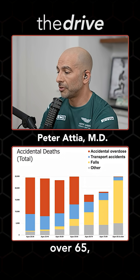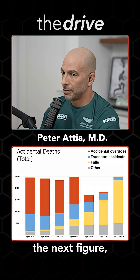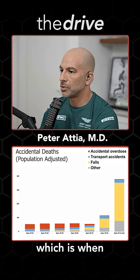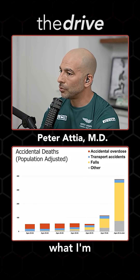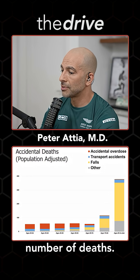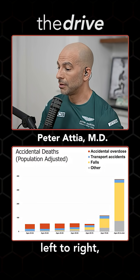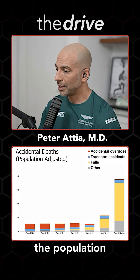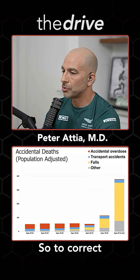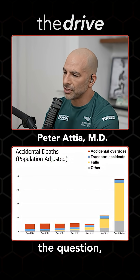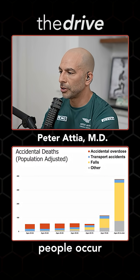For people over 65, falls are the predominant cause. But the next figure tells a more important story, which is when you adjust for the population. In Figure 1, what's shown is the total number of deaths — but as you move left to right, the denominator, the population, is getting smaller and smaller. There are fewer and fewer people in each bucket as you go to the right. To correct for that, we ask how many deaths per hundred thousand people occur in each group.